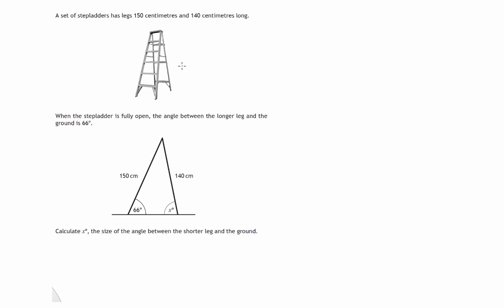Here we have a set of step ladders with two legs: a longer leg of 150 centimetres and a shorter leg of 147 centimetres. We're asked to find the angle — that's this angle here — that the shorter leg makes with the ground, that's the ground here.